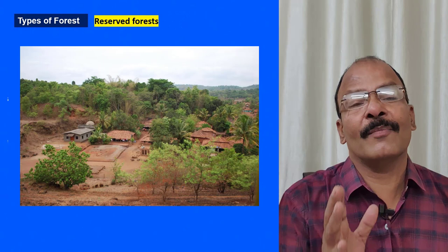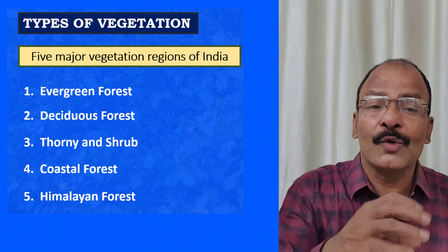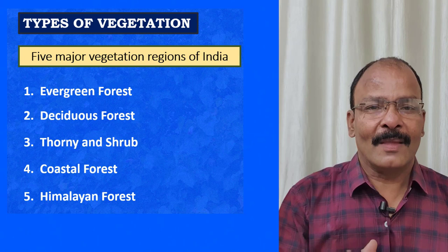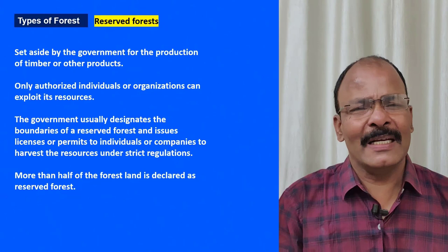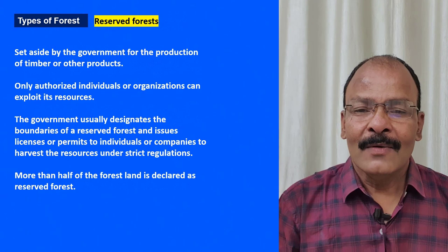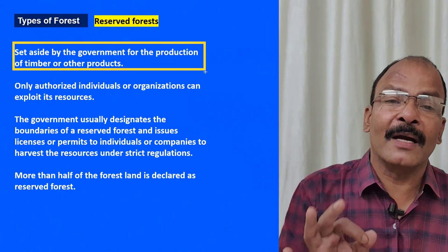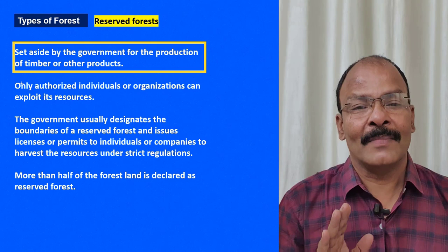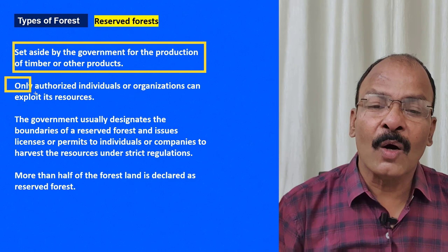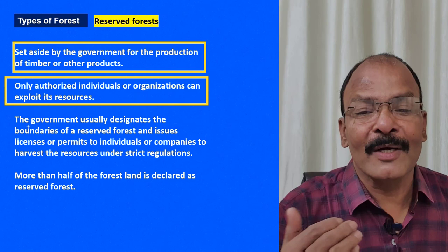Forests are classified on political grounds by the government into three types. The first is reserve forest — the forest set aside by the government for the production of timber and other products. Cutting is allowed here, but only by authorized individuals who have signed a contract with the government and received a license.